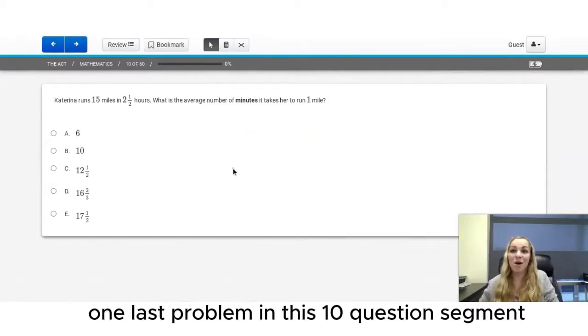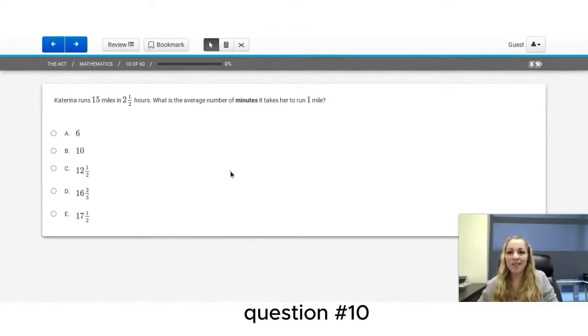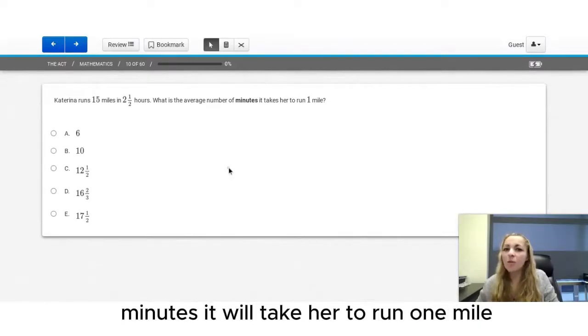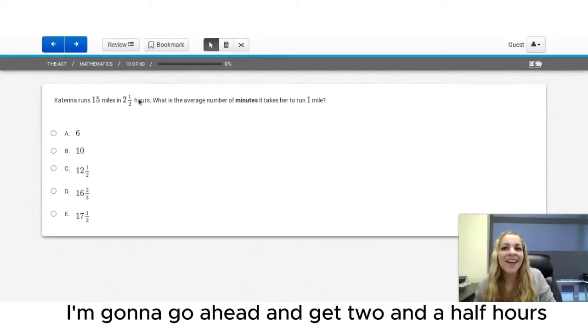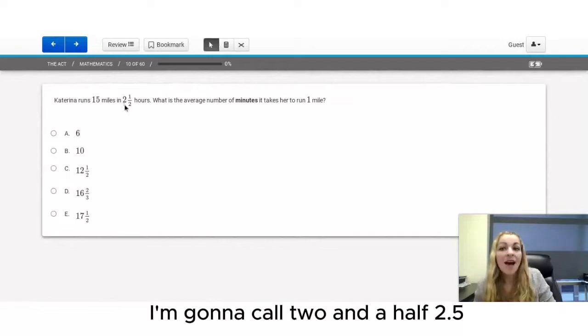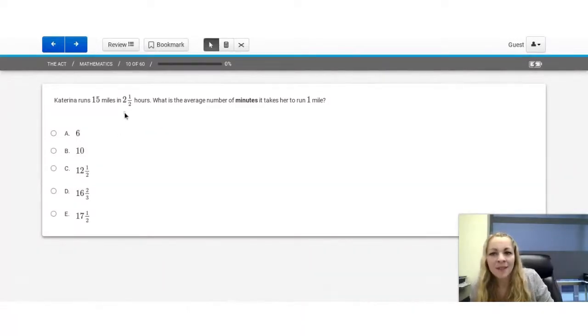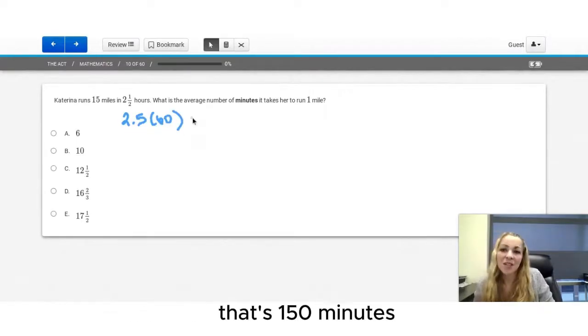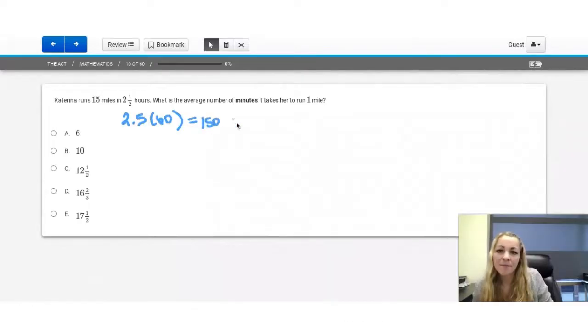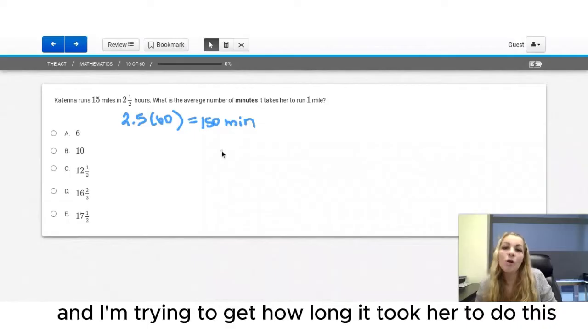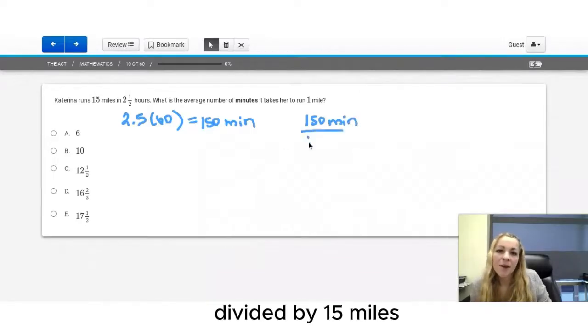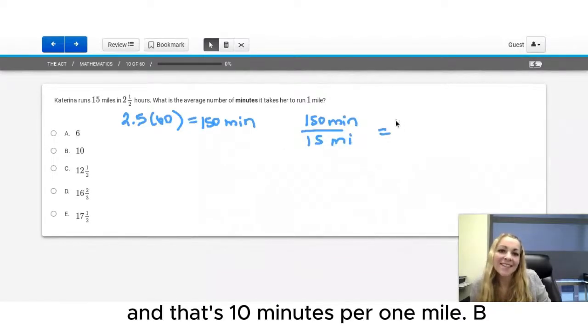One last problem in this 10-question segment. Question number 10, Katrina runs 15 miles in two and a half hours. What is the average number of minutes it will take her to run one mile? I'm going to get two and a half hours into minutes. I'm going to call two and a half 2.5. Students really seem to love decimals. So I'm going to do 2.5 times 60. That's 150 minutes. And I'm trying to get how long it took her to do this. So I'm going to do 150 minutes divided by 15 miles. And that's 10 minutes per one mile B.